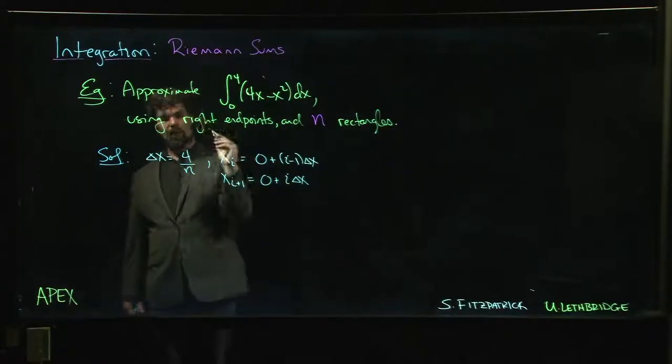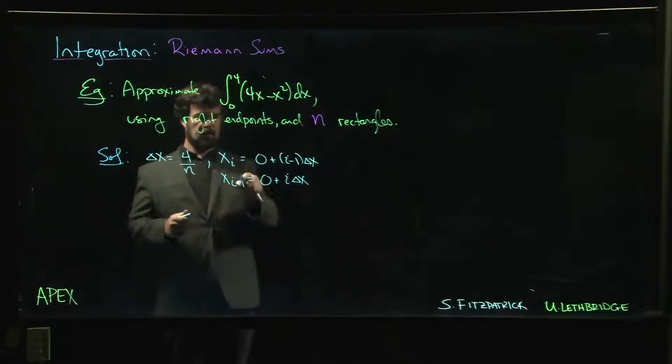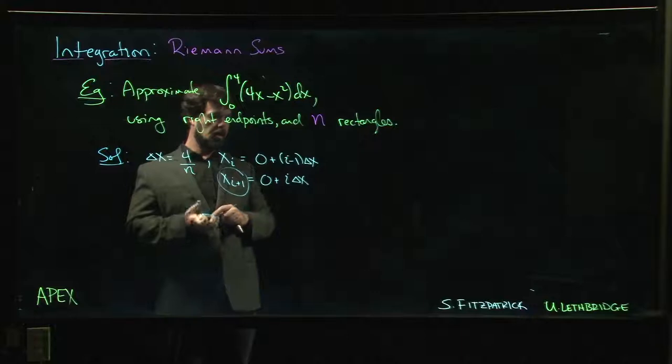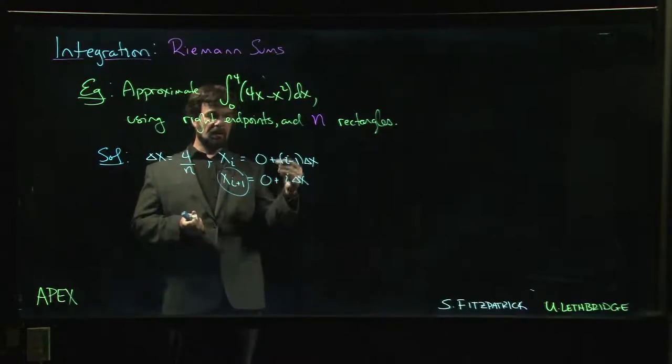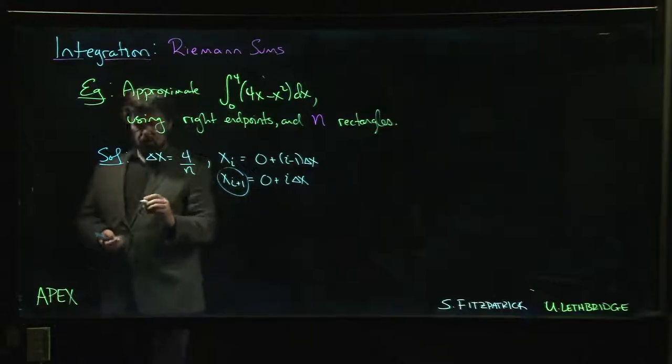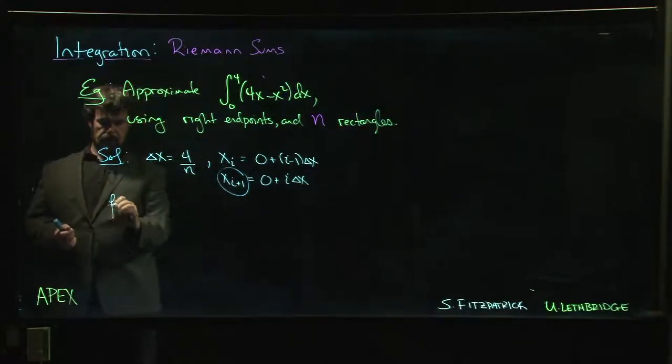If we're using right endpoints, that means we want to use Xi plus 1, which is good because it's a lot simpler to just have the i in there.